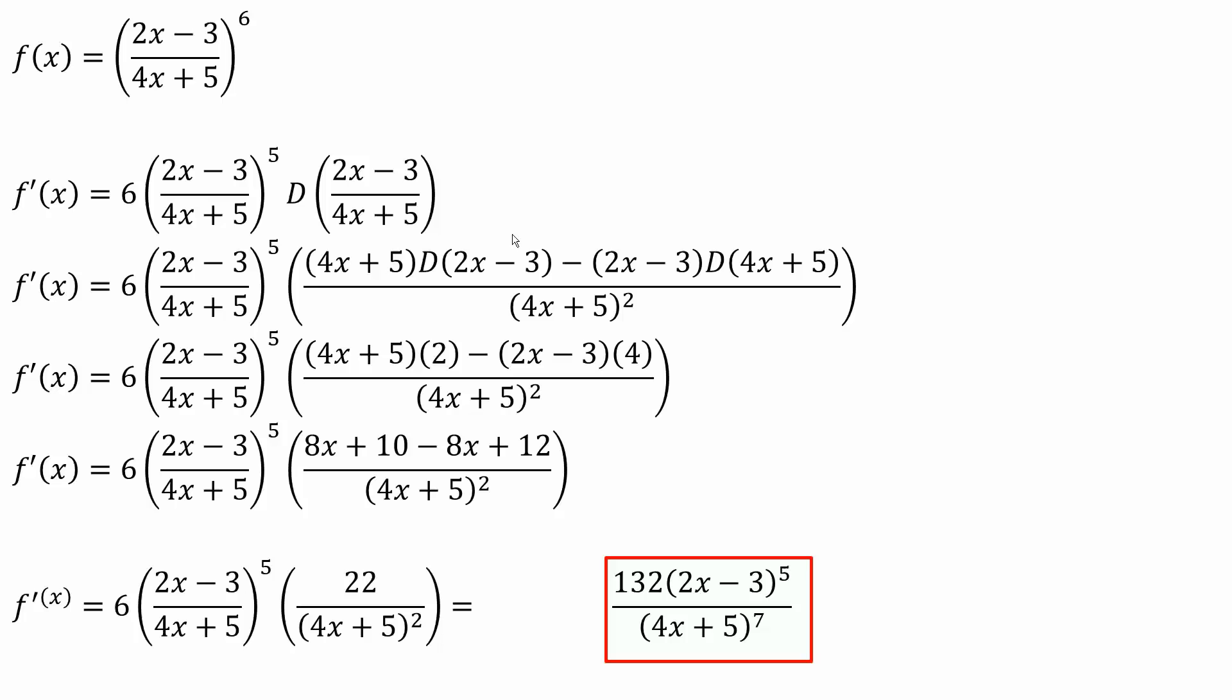Now we take the derivative of 2x minus 3 and 4x plus 5, which gives us 2 and 4. Next we expand. 4x plus 5 times 2 gives us 8x plus 10, minus 2x minus 3 times 4, which gives us negative 8x.